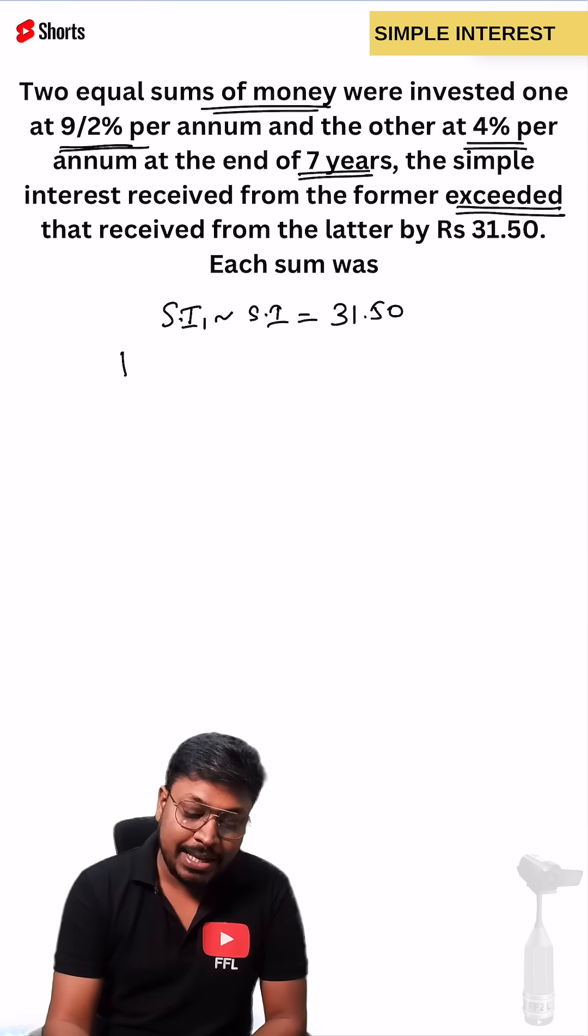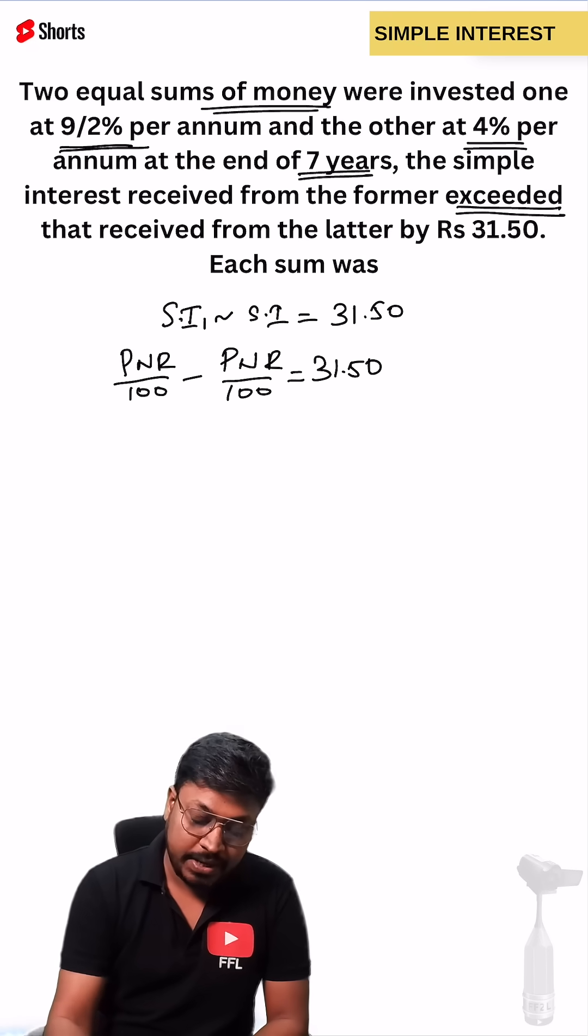Now solving the question is very easy. PNR/100 difference, nothing but subtraction. PNR/100 equals 31.50.